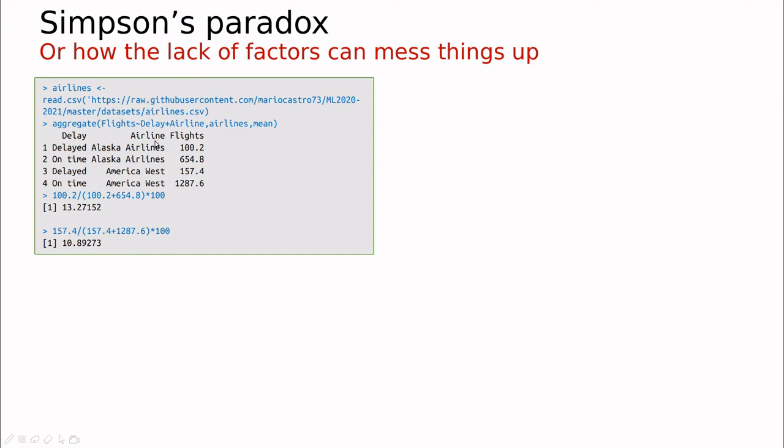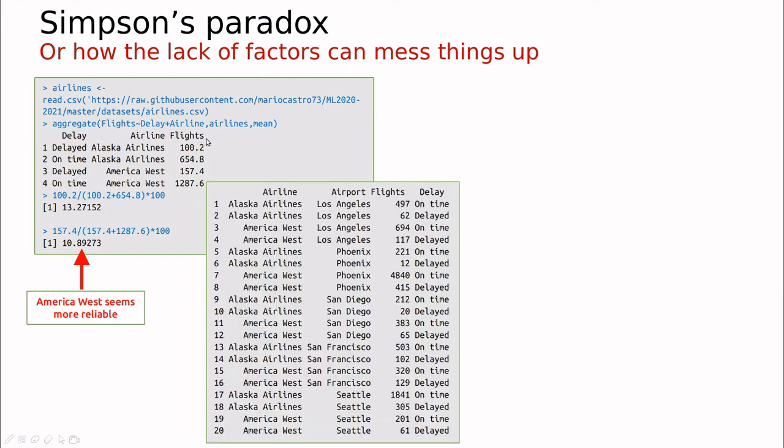Forget about the details about this command. The idea here is that if you take a look at those companies, you can see that overall, if you divide the number of delayed flights for Alaska Airlines, you have this number here. It's 100 divided by 100 plus 654, and this is 13% of the flights are delayed. And if you do the same for America West, you can see that you have 157 delayed out of 1,286 plus 157. So this is around 11%. So if you take a look at this raw data, you would say, okay, America West seems more reliable.